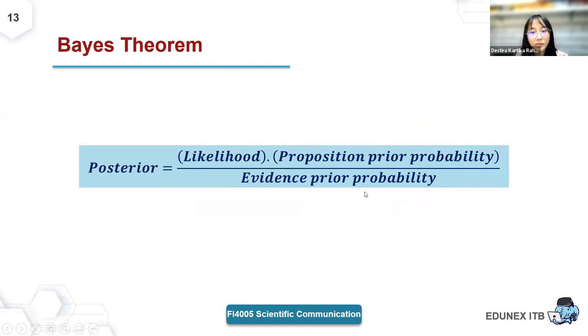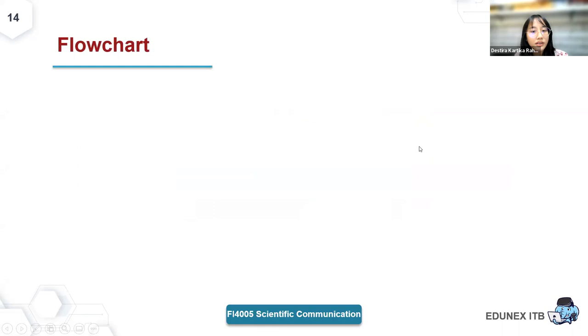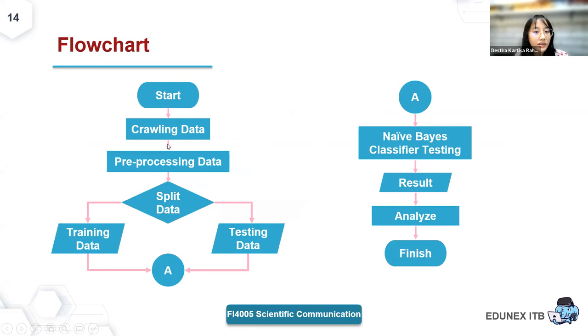The overall flowchart involves crawling data, pre-processing the data, inputting the training and testing data into the program, classifying using the Naive Bayes algorithm, obtaining results, and finally analyzing them. That brings me to the end of my presentation. Thank you all for listening. I would like to hear your comments.